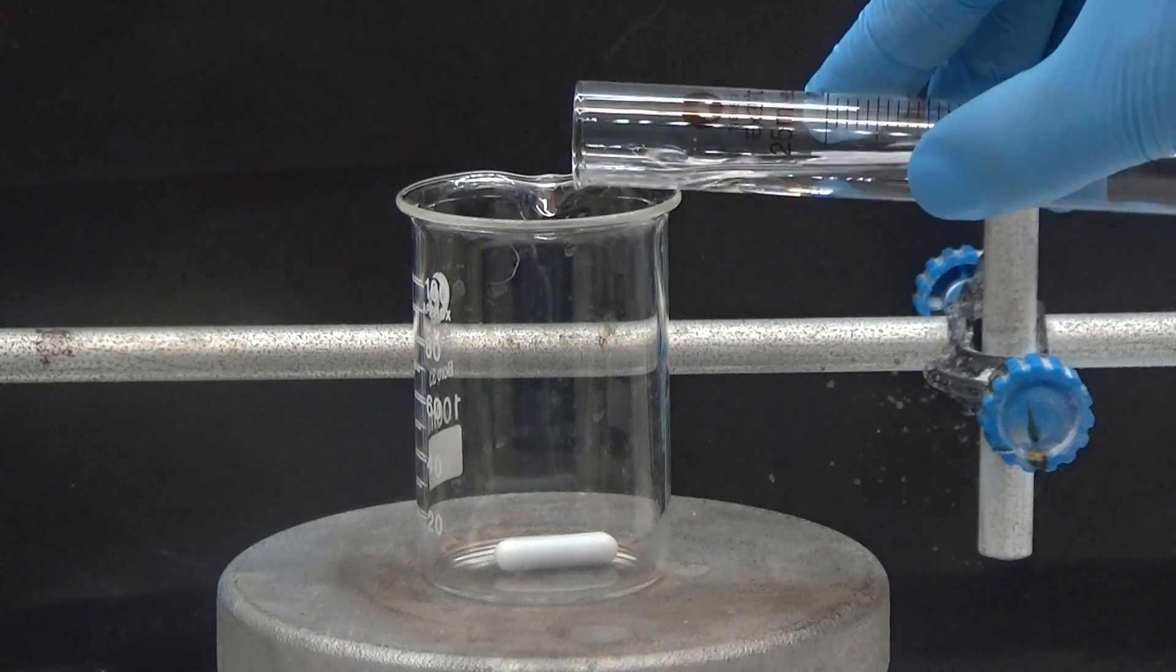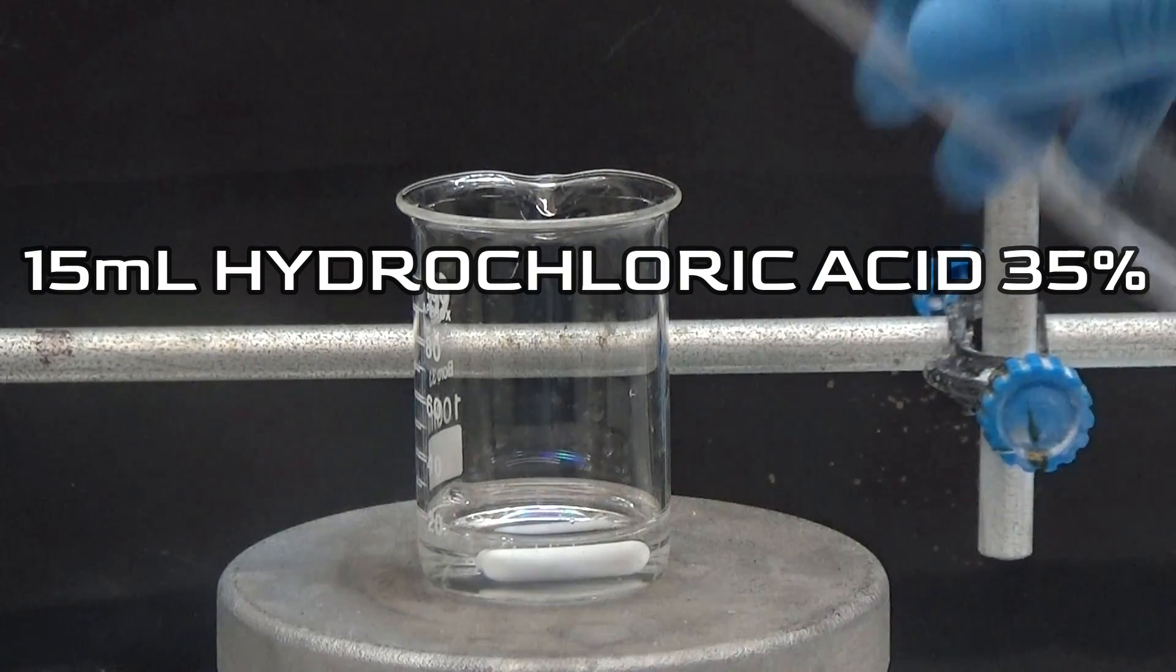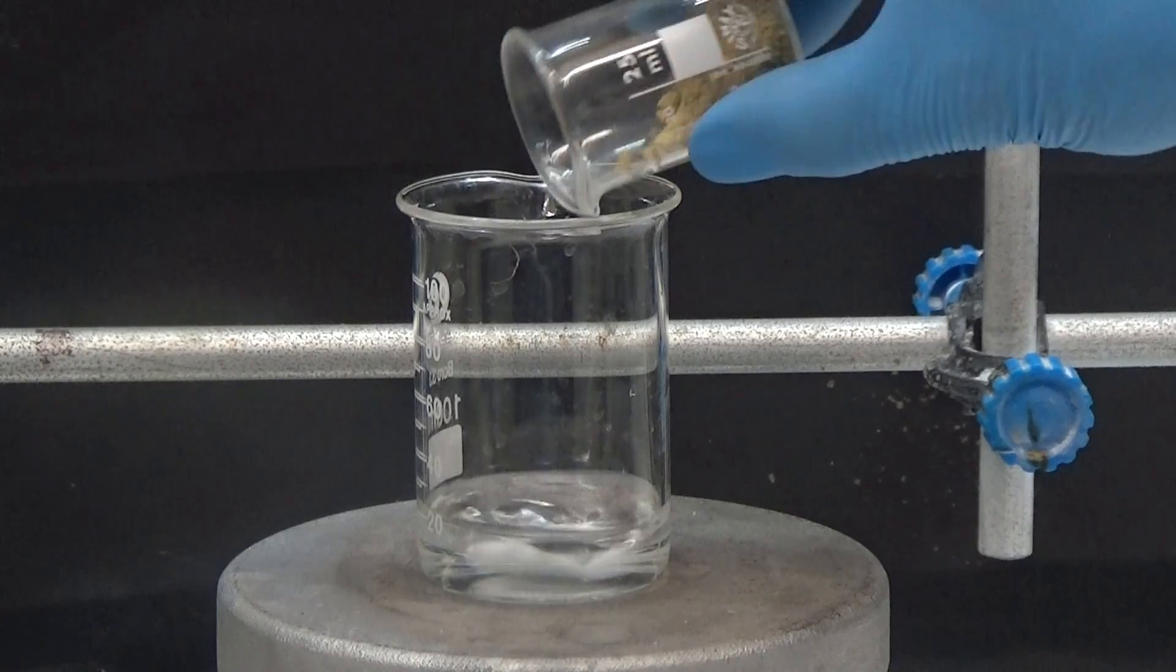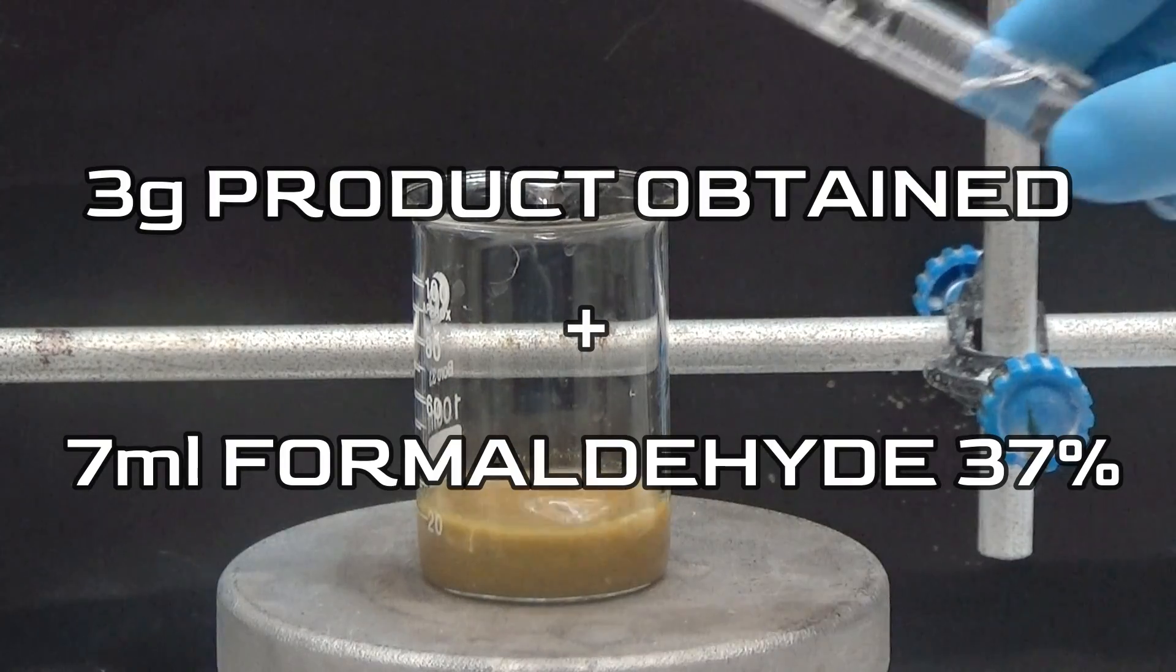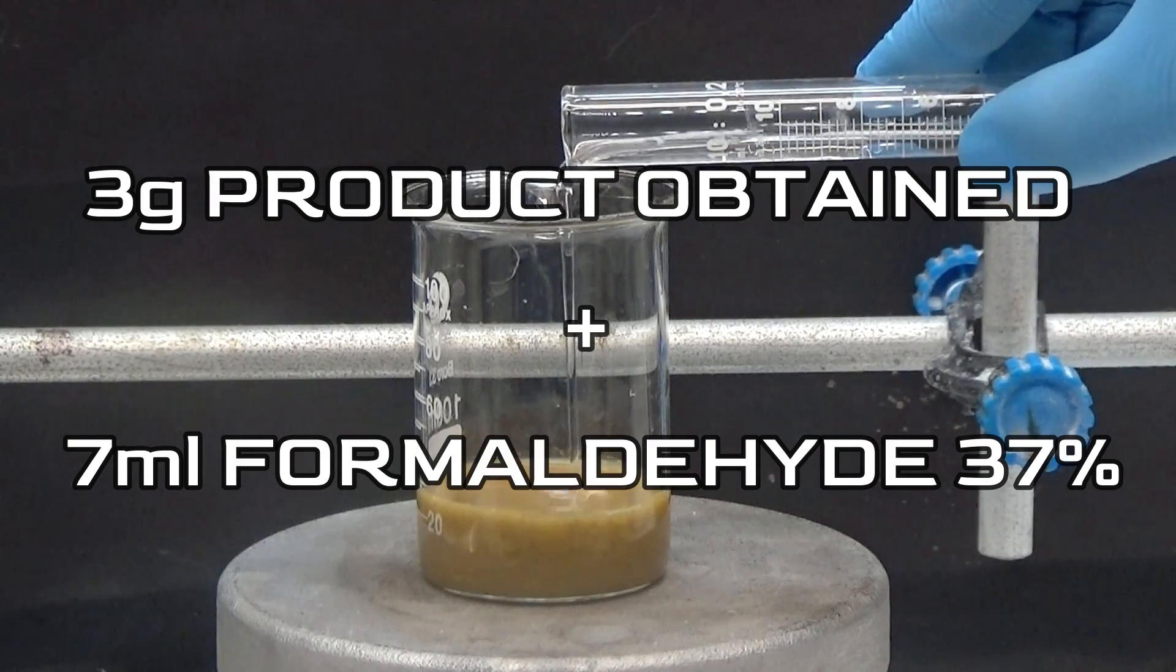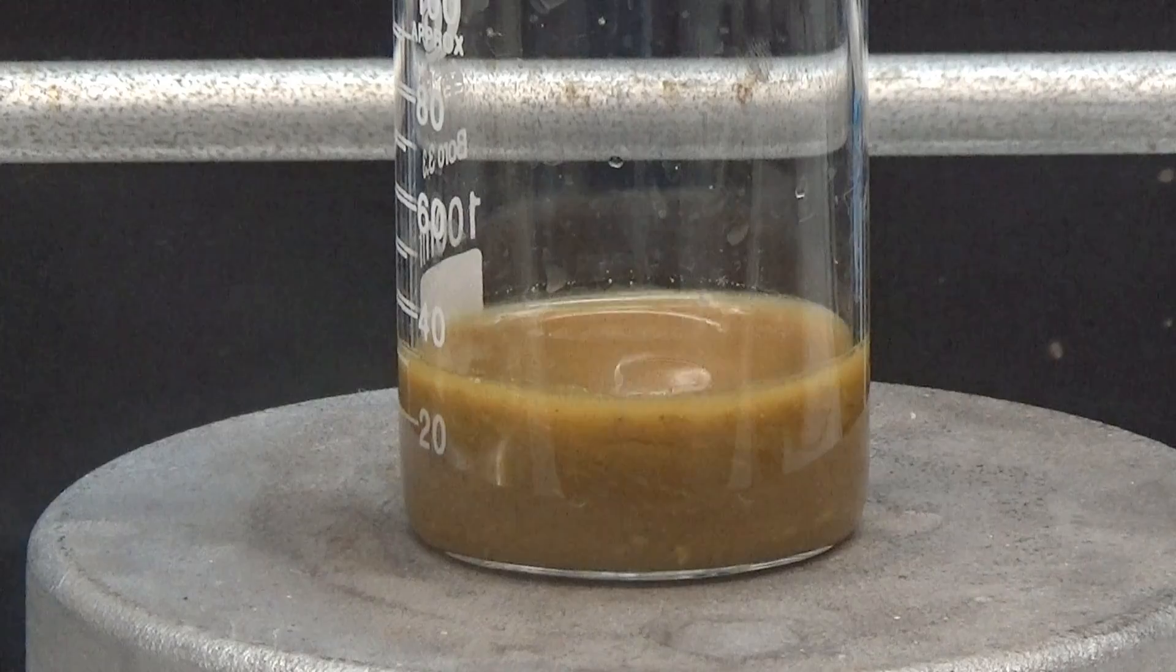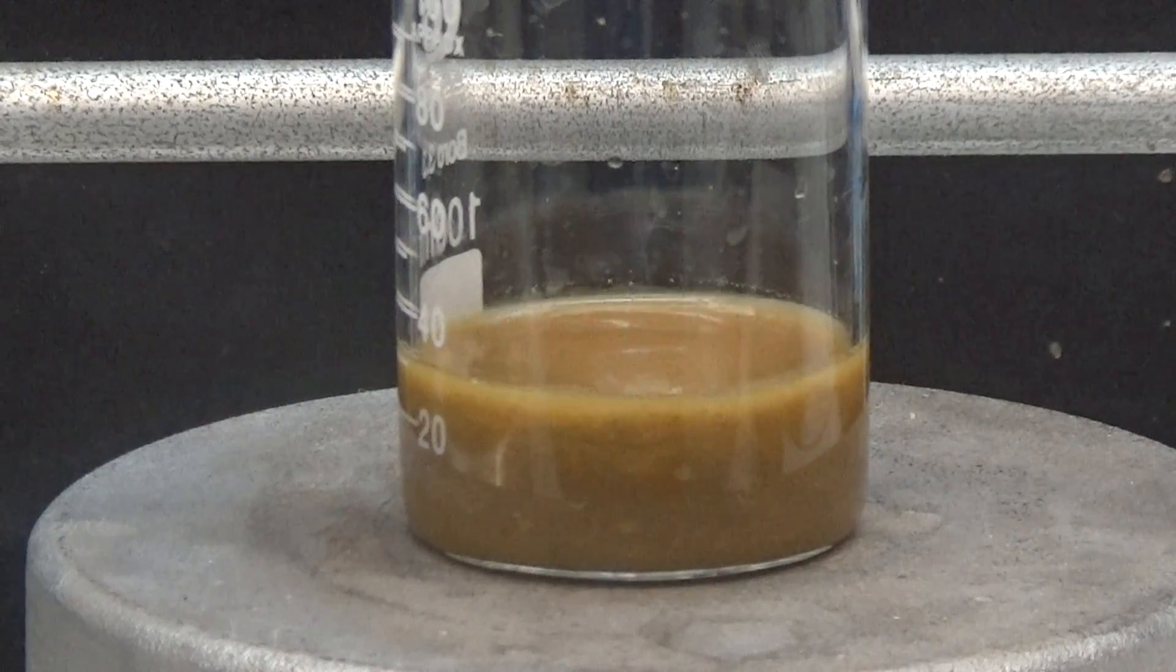In the second part of the synthesis, we added 15 ml of 35% hydrochloric acid to a 100 ml beaker. With stirring, we add 3 grams of the product obtained previously and 7 ml of a 37% formaldehyde solution. Stirring for 3 hours at 25 degrees.